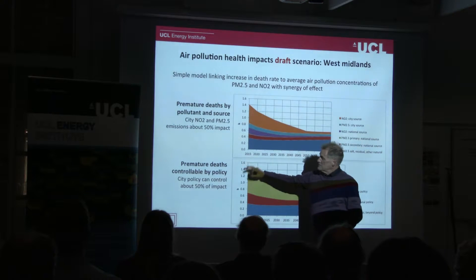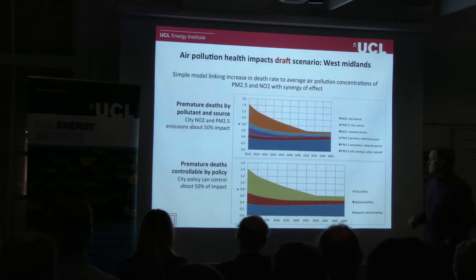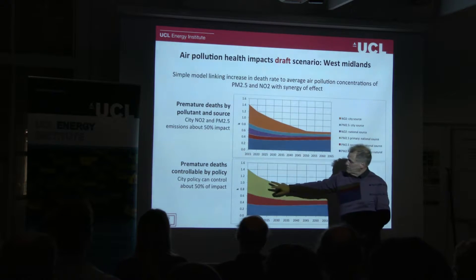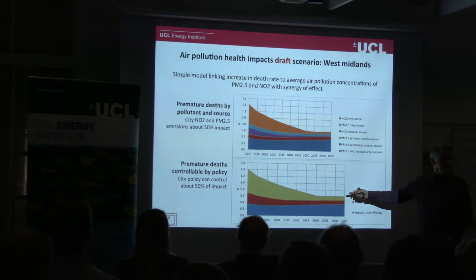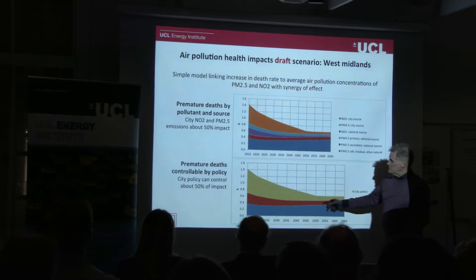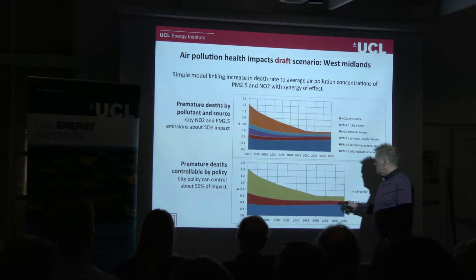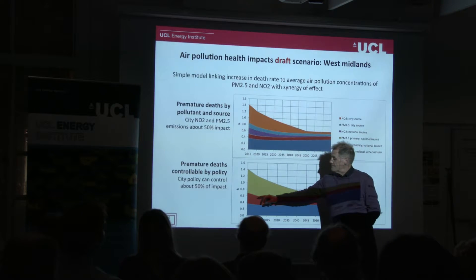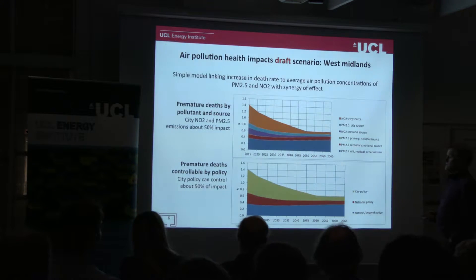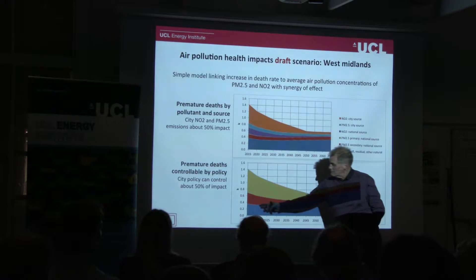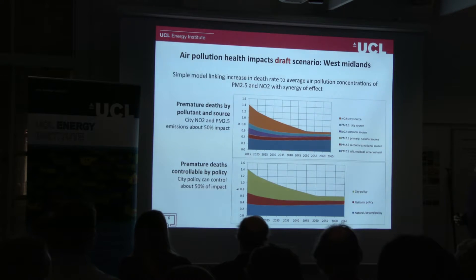Finally we have the premature deaths controllable by policy. The green area here is the fraction of premature deaths which are controlled with city policies — things like electrifying vehicles and heating within the city. Then you have the impacts controllable with national policies, such as replacing coal and gas generation with renewables to reduce NOx emissions. And finally we have these rather uncontrollable sources of health impact which can't be controlled either by city or national policy.